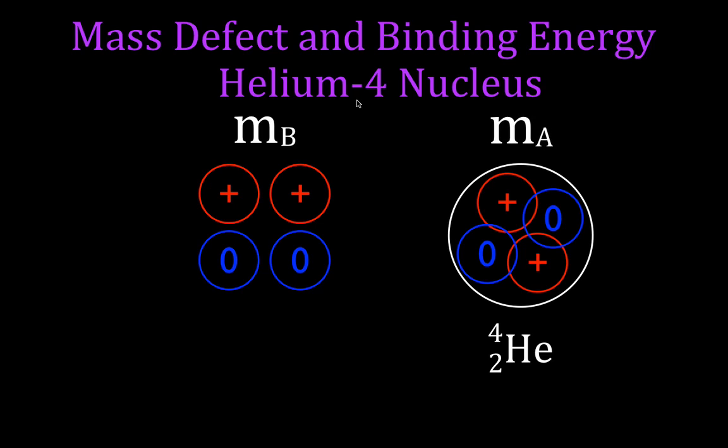When we add up the mass before and look at the mass after, we're going to find out that the mass before of the individual constituents — the two protons and the two neutrons — is greater than the mass of the helium-4 nucleus.